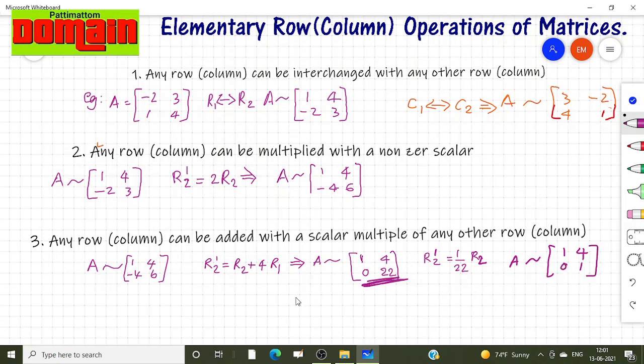Then again we go to transform the first row. New first row becomes adding first row, existing first row with negative 4 times of second row. What we get.